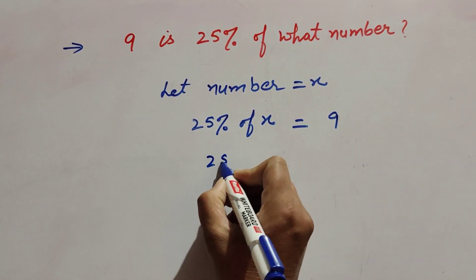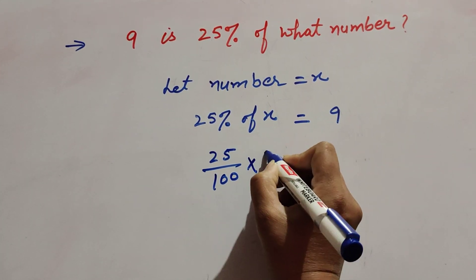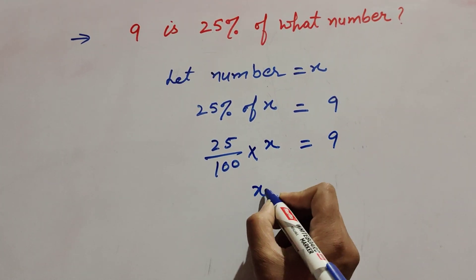Now we simplify. 25 percent means 25 over 100. There is 'of' - 'of' means multiply - into x equal to 9.